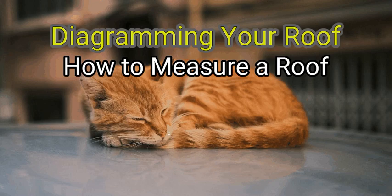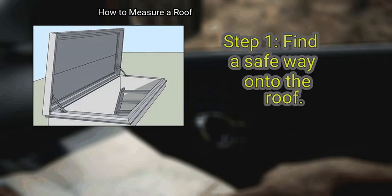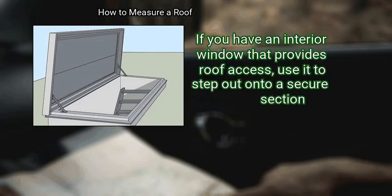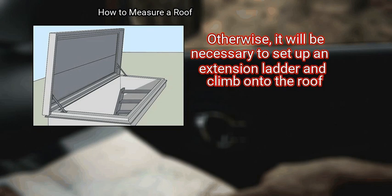Method 2: Diagramming Your Roof. First, find a safe way onto the roof. If you have an interior window that provides roof access, use it to step out onto a secure section. Otherwise, it will be necessary to set up an extension ladder and climb onto the roof.